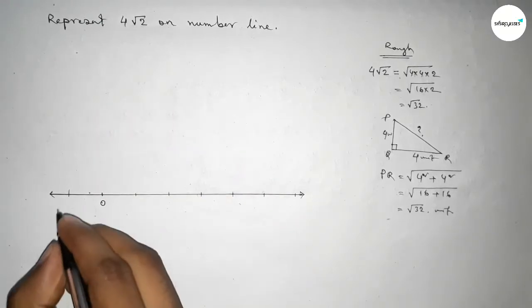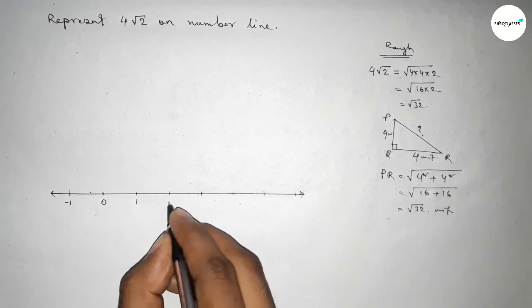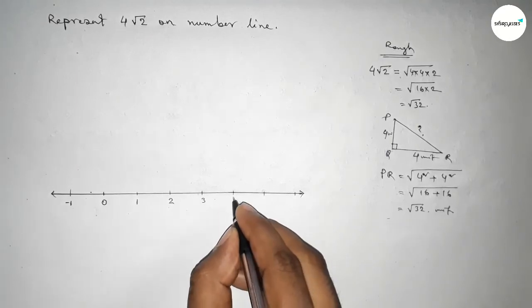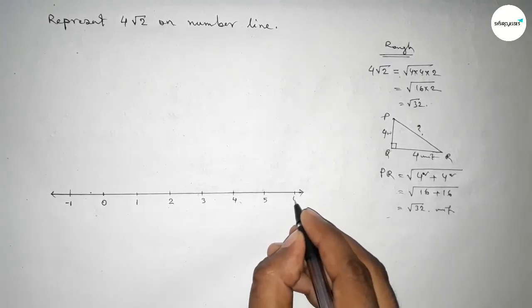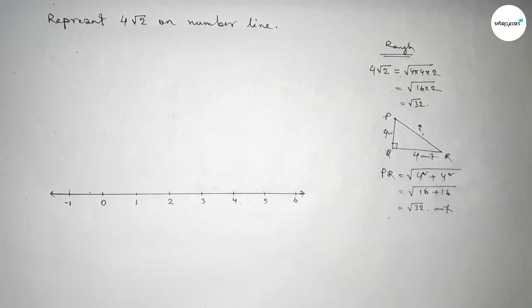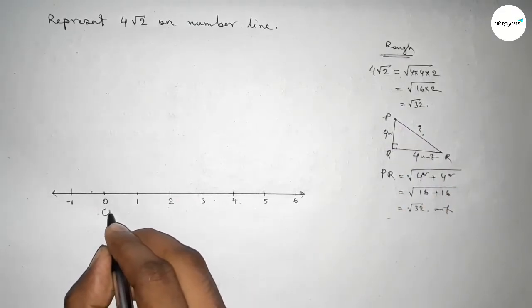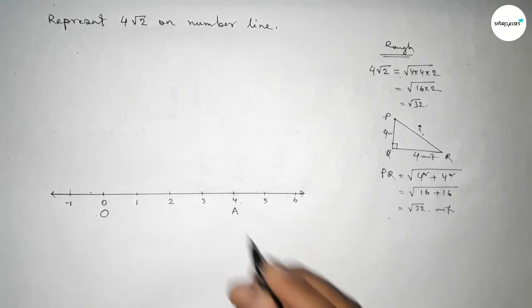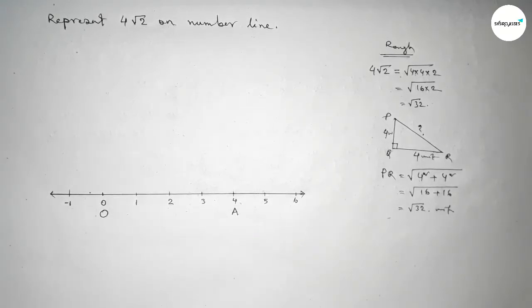So taking here point minus 1, here 1, 2, 3, 4, 5, 6. Now applying this concept between 0 to 4, so taking here point O and here A. Now first we have to draw a 90 degree angle on the point A.